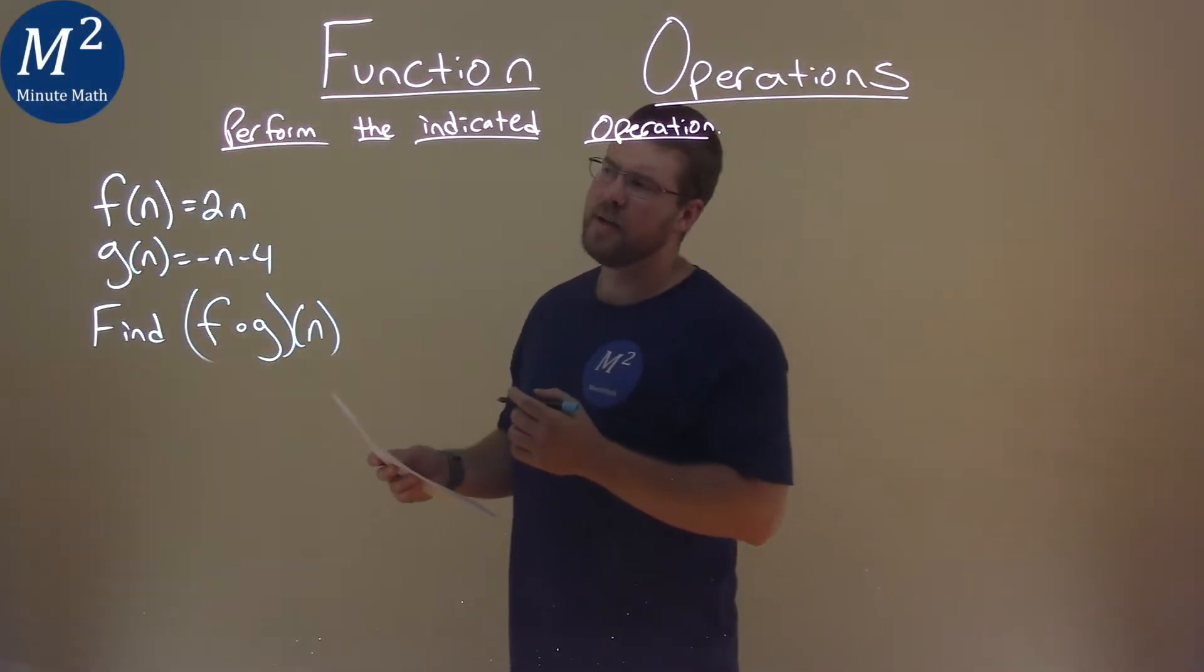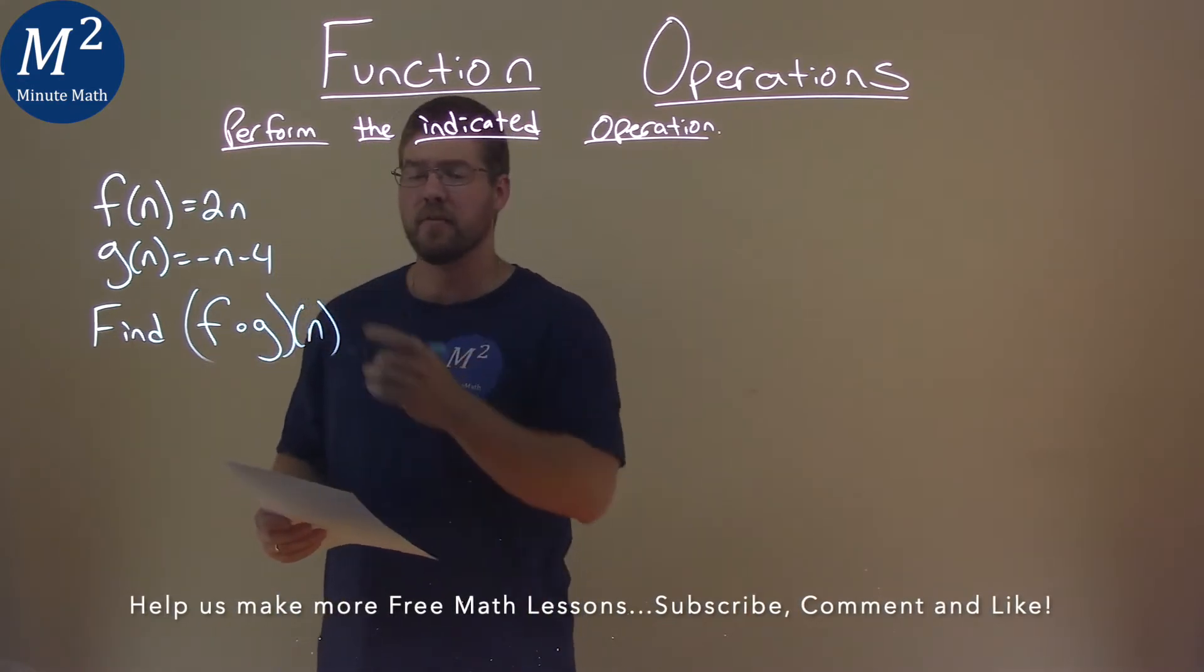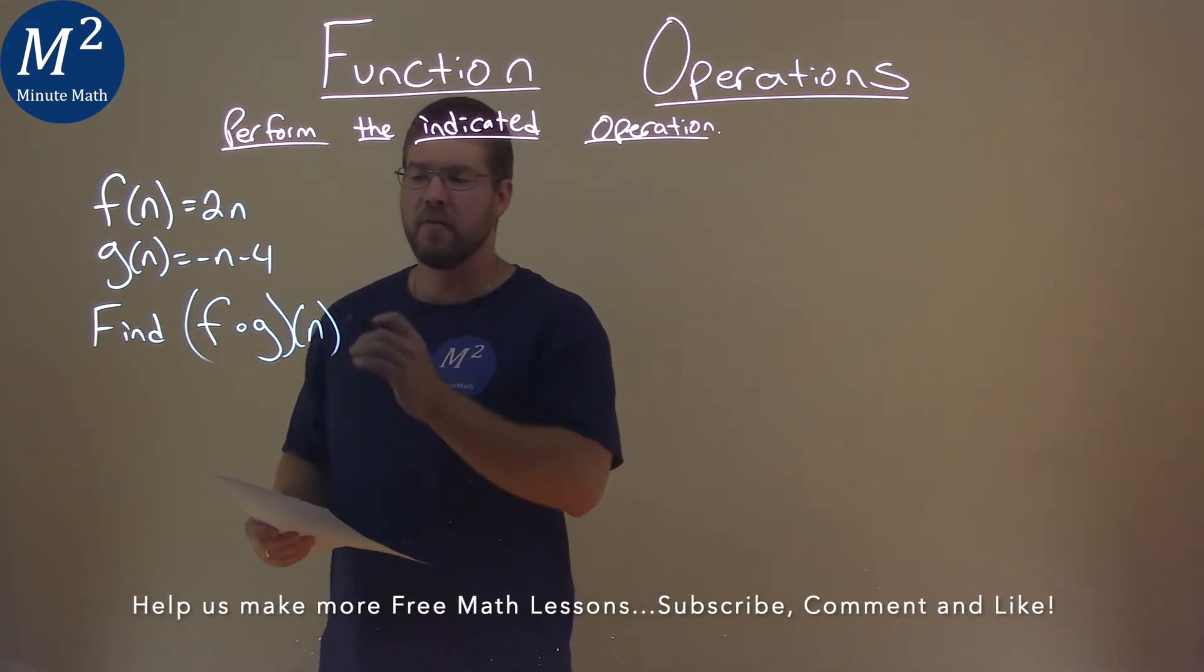We're given this problem right here. f of n is equal to 2n, g of n is equal to negative n minus 4, and we need to find f of g of n.